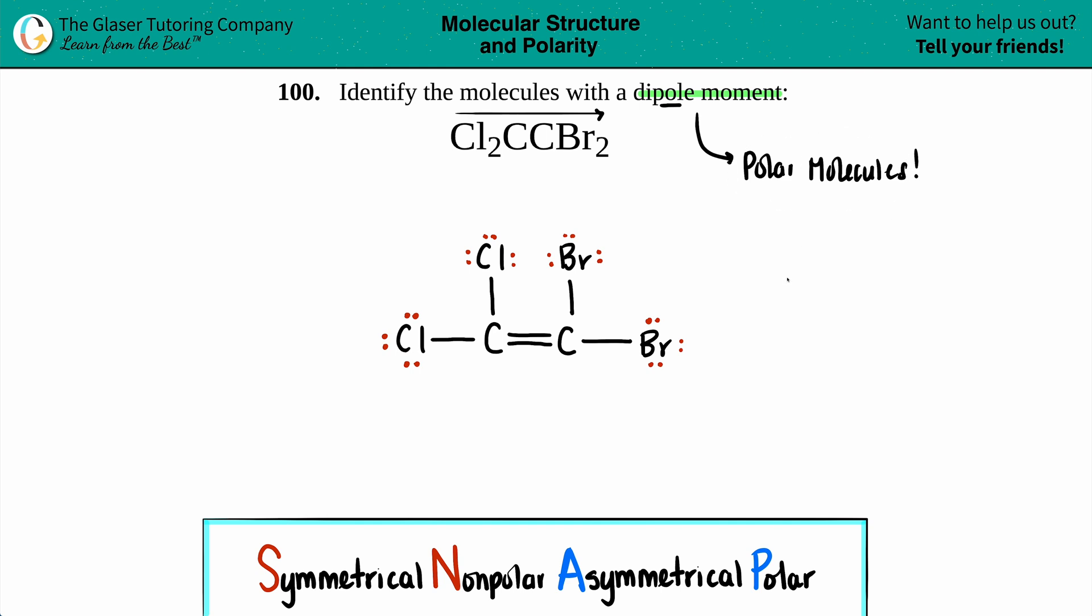Now let's SNAP it out. To find out if you have a polar or nonpolar molecule, use SNAP. If your molecule is completely symmetrical, it's nonpolar with no dipole. If it's asymmetrical, it's polar and has a dipole moment.